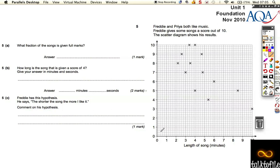The length of the song goes along here, and then the score he gave them goes up the side here. What fraction of the songs is given full marks? Well, first of all, he rated 13 songs. He rated 13 songs, and 2 of them got 10. So the fraction given full marks is 2 out of 13.